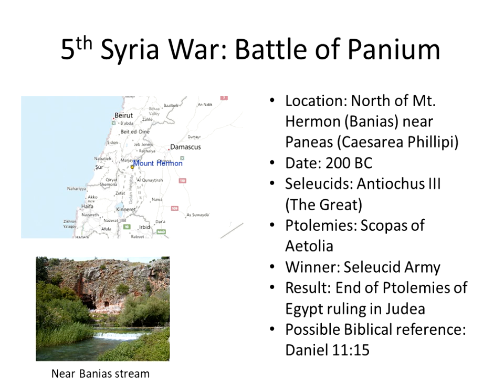The fifth Syrian War was the battle of Panion, located near Mount Hermon near Panion, which became Caesarea Philippi. It was about 200 BCE. The Seleucids had Antiochus III, and the Ptolemies had Scopas of Antiochus as the general. The winner was the Seleucid army — Antiochus III was a tremendous driver of the army. In the end, it ended with the Ptolemies of Egypt losing Judea, and there may be a possible reference to this in Daniel.